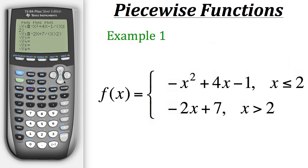And then close the parentheses. So now with our Y2, we have the second part of our piecewise function: negative 2x plus 7, with the condition of x being greater than 2. When you're doing piecewise functions on your calculator, to set the condition you always just hit the divide button, and then in parentheses type out the condition.